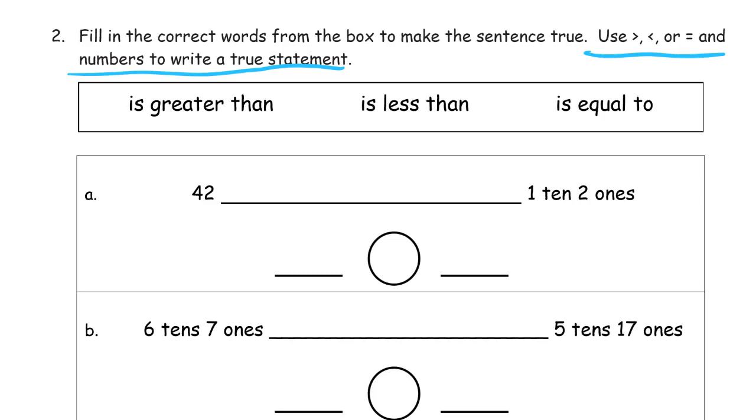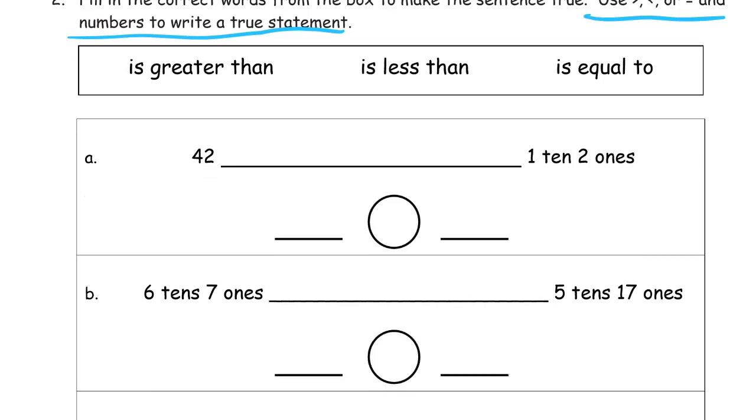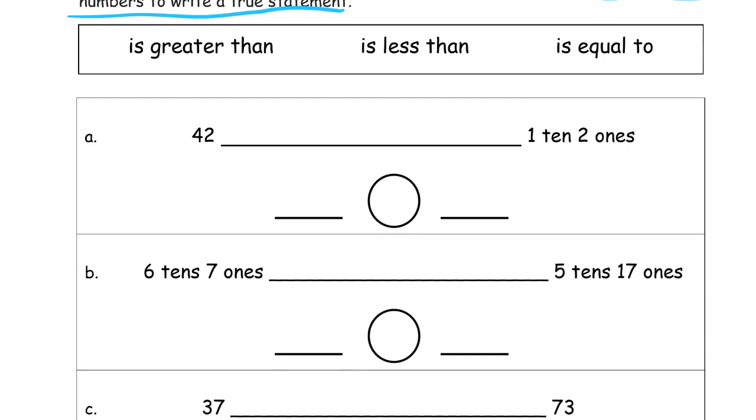Use greater than, less than, or equal to, and numbers to write a true statement. So here's how it's going to go, and we're going to get numbers in unit form, in regular form, and we're going to end up having to write the symbol for greater than, less than, or equal to, and regular numbers are going to go here and there. And you'll see, right away, after the first one we do, how everything's supposed to look.